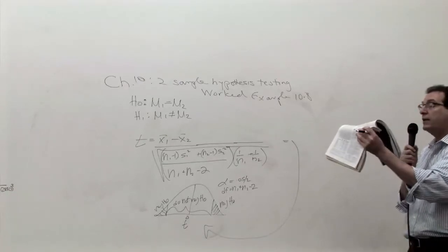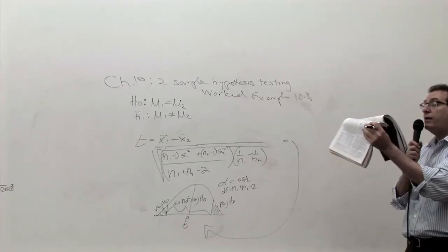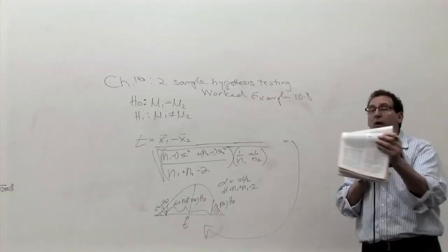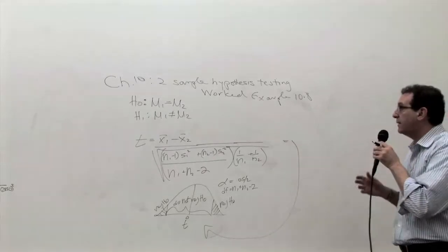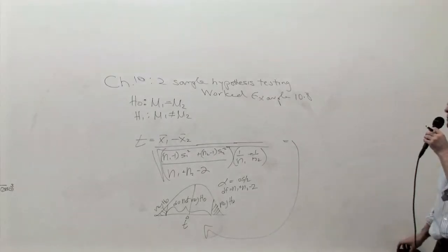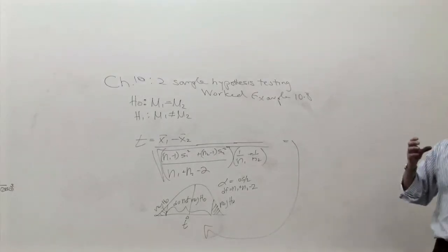At the 0.01 level of significance, determine is there evidence the purchasing manager should buy the new machine? That's the question. The first thing to recognize is you're dealing with Chapter 10. There's two samples going on here.